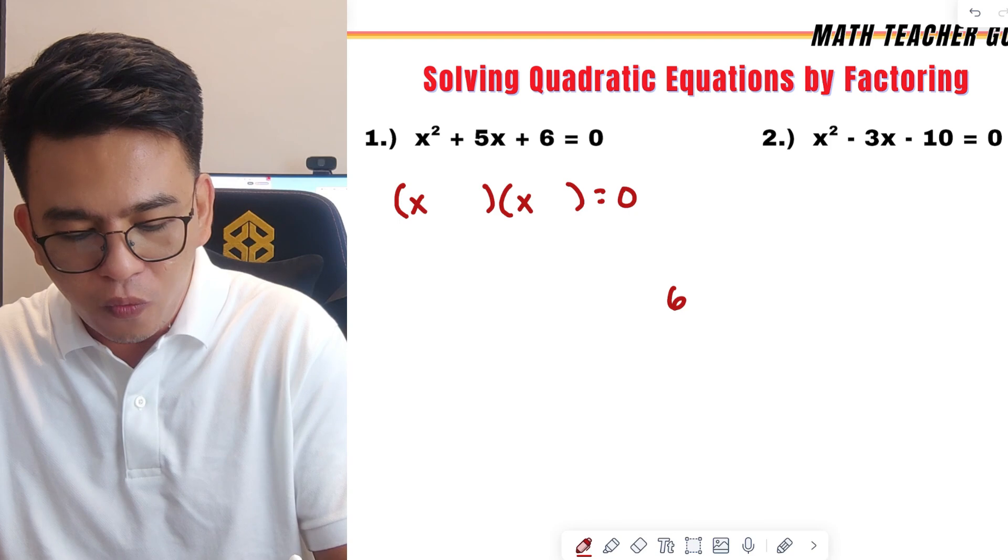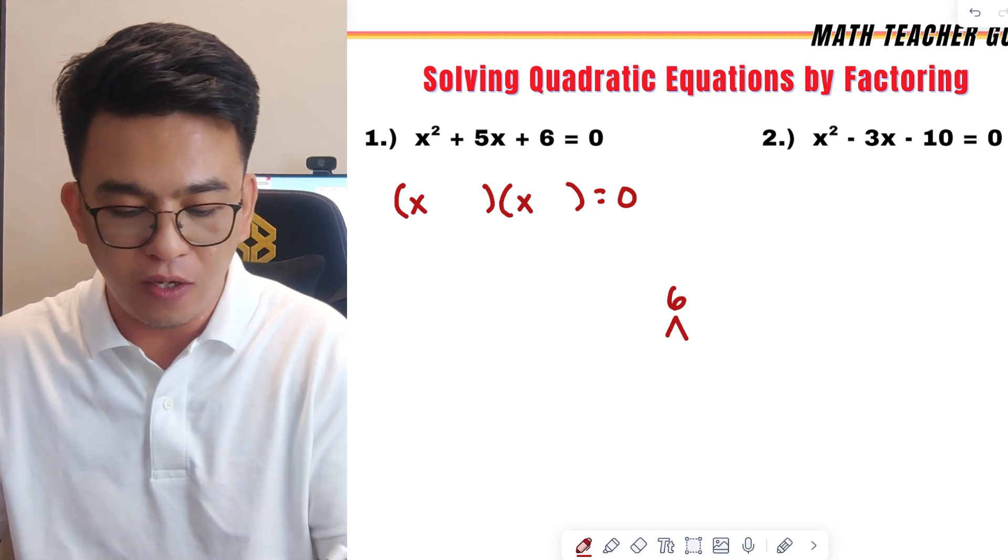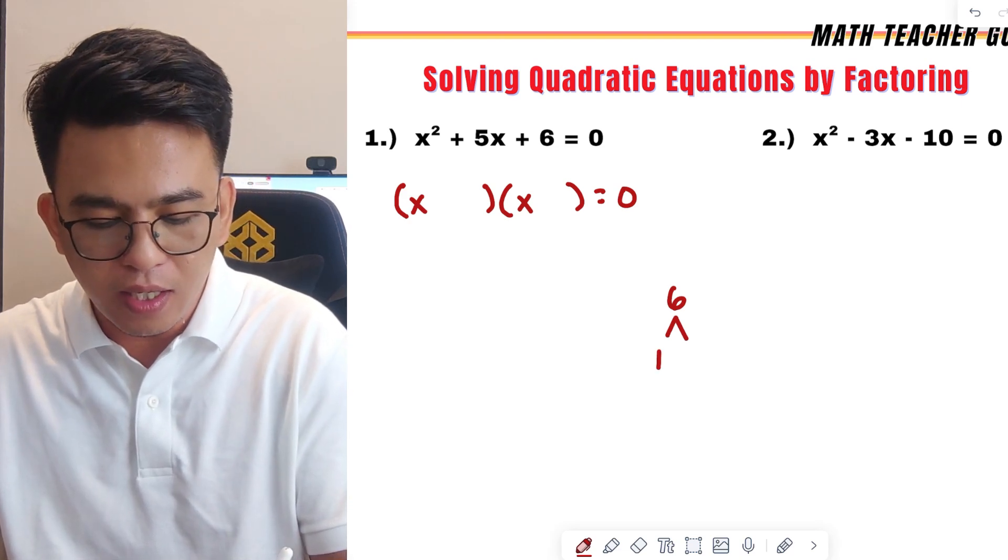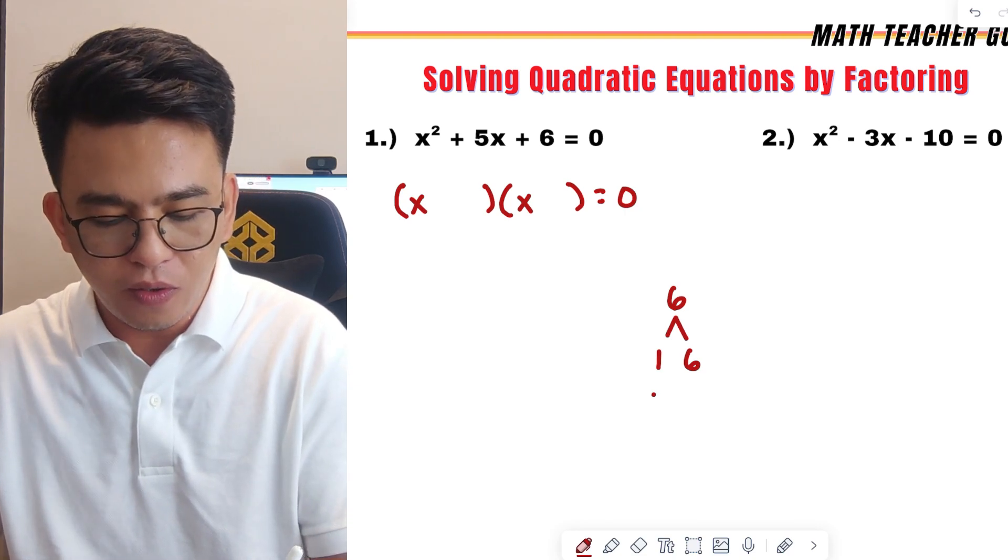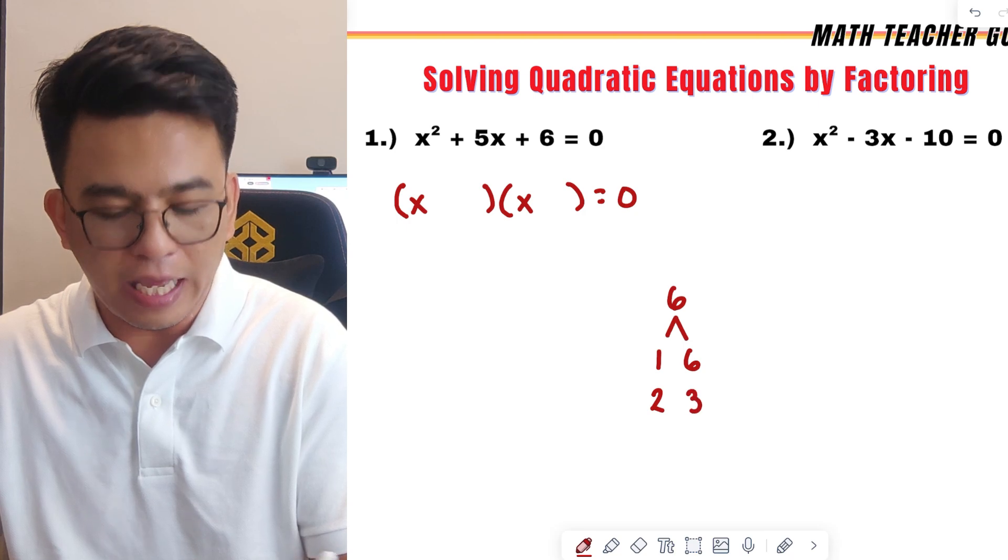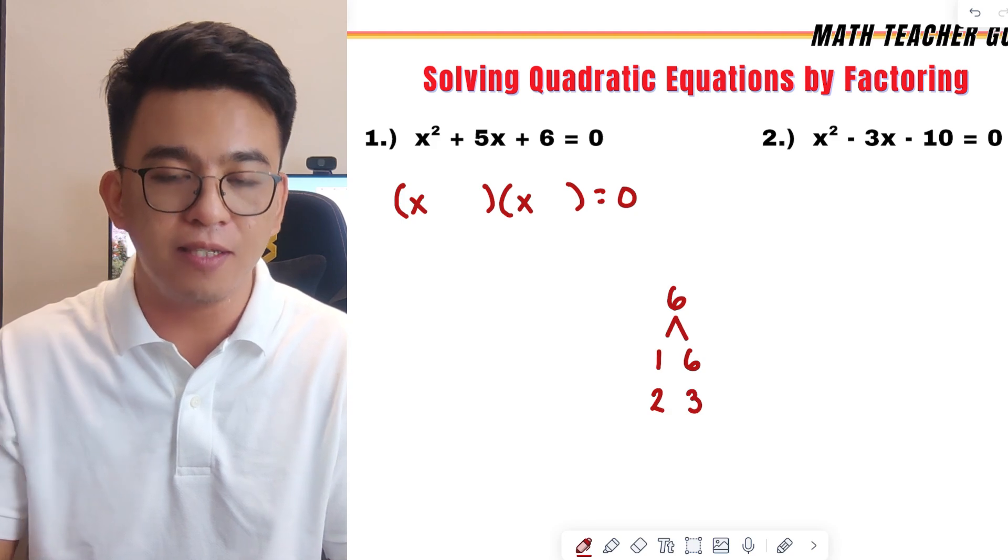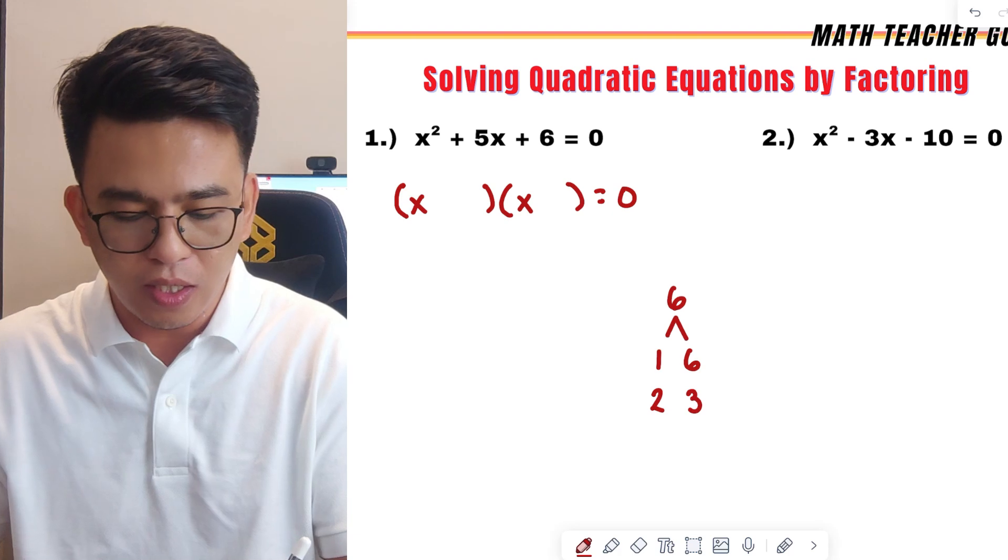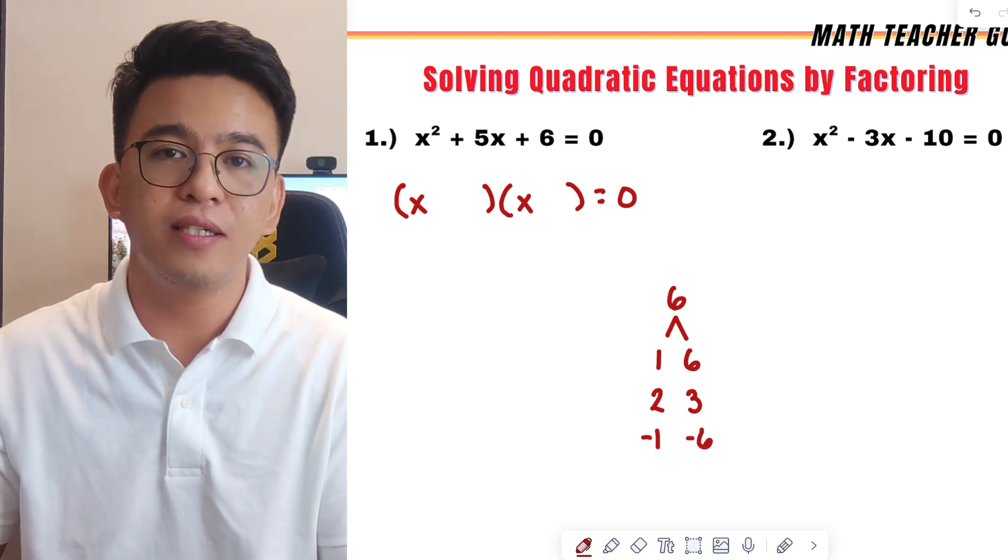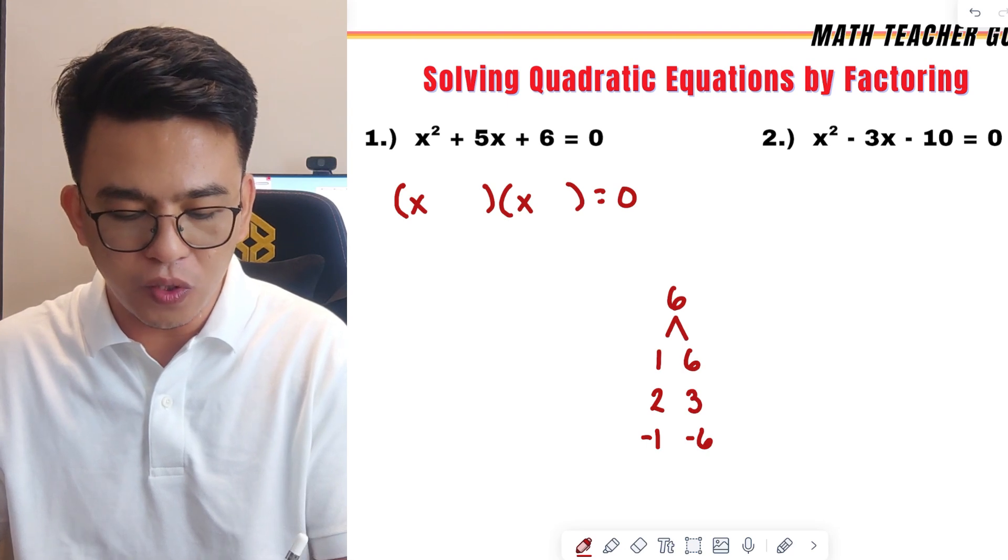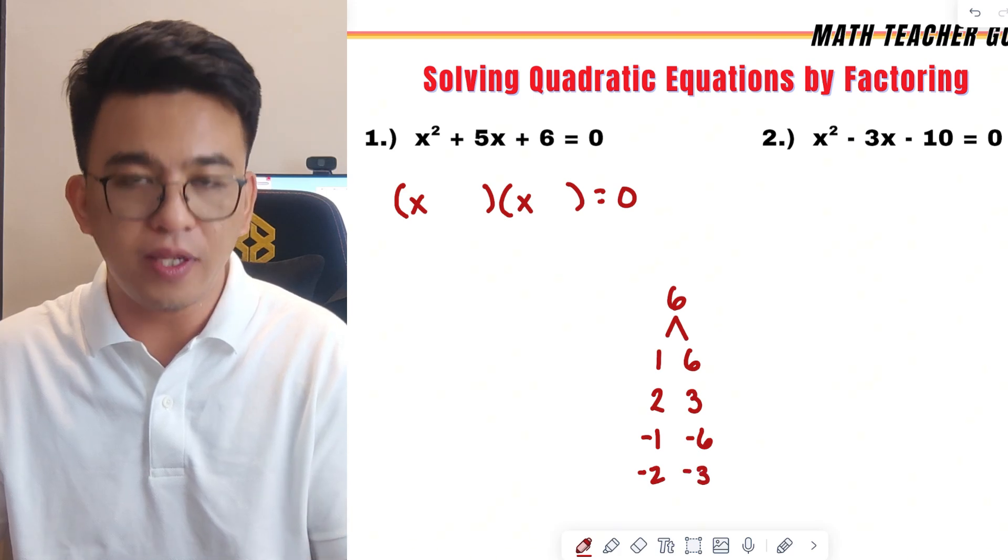To know that, we need to list down some of the factor numbers of 6. We have 1 times 6, we also have 2 times 3. And aside from using the positive numbers, since 6 is positive, we can also use negative 1 and negative 6, we can also use negative 2 and negative 3.